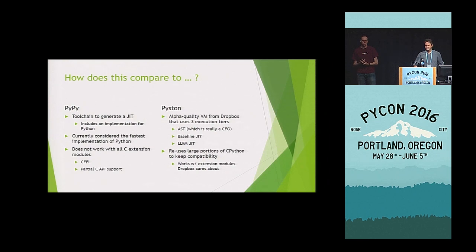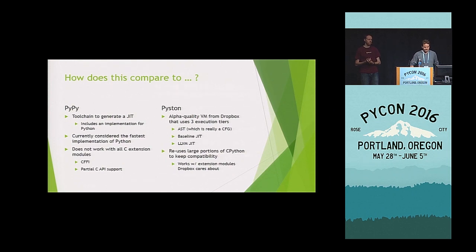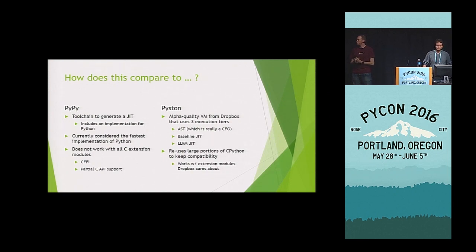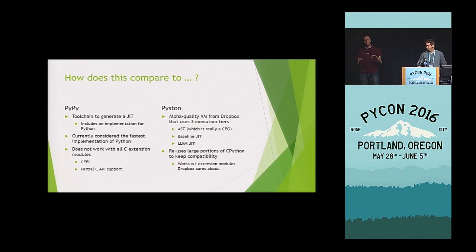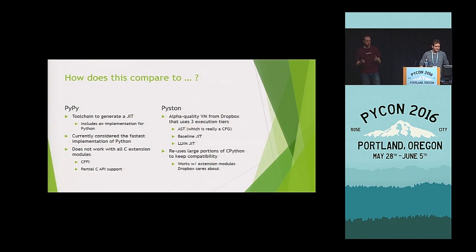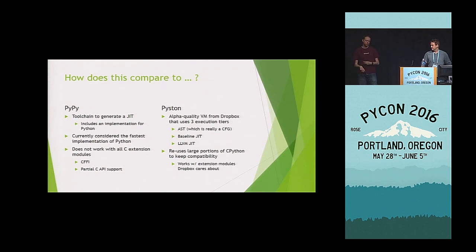If you know the PyPy team, they're constantly working and improving — they work ridiculously fast. So they're definitely catching up, but they're not there quite yet. There's also Piston coming out of Dropbox. They've just hit 0.5 this week, and they are targeting Python 2.7. They have their own JIT framework with a baseline JIT going from a control-flow graph to their own basic JIT, and then if anything gets too hot, it goes all the way down to LLVM. They also have not quite hit full extension module support, and their latest version has added back in reference counting to try to keep the compatibility.